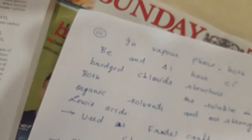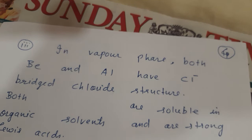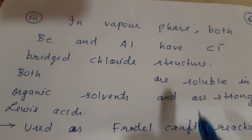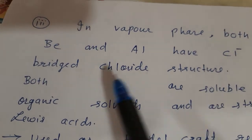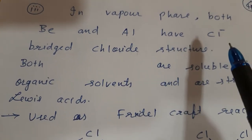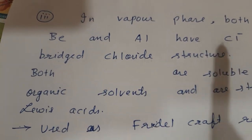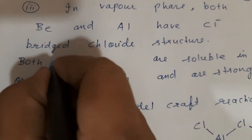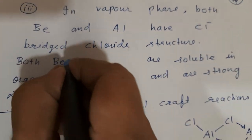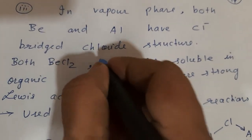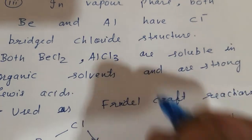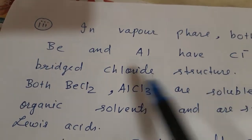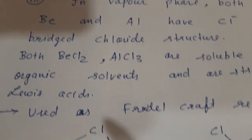In the vapor phase, both beryllium and aluminium have a chloride-bridged structure — beryllium chloride and aluminium chloride both exist as dimers with chloride bridges.